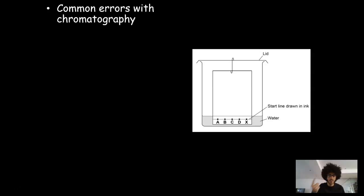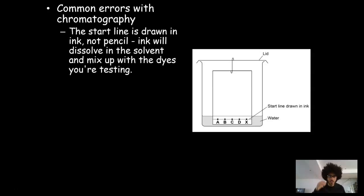Now, you need to be able to do two things. First, identify what those errors are. And secondly, you need to explain why they're bad, why they're a problem. So in this particular diagram, you can see that the start line is drawn in ink, not pencil. That's really bad, because then what will happen is that the ink will dissolve into the solvent, and it'll mix up with all the dyes that you're testing. So you'll just have this splurge of color, and it won't be very good. So that's a problem. So you always have to draw in pencil, not pen.